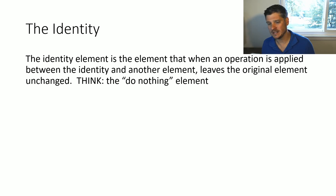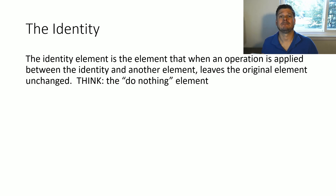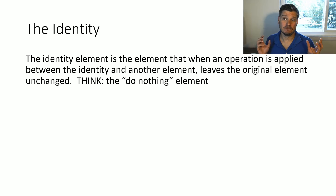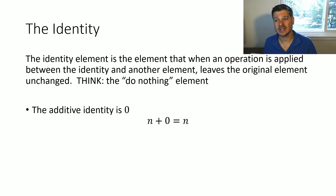Let's move on to the whole point of this video: identities and inverses. We'll start with the identity. The identity is not something unique to linear algebra — it's a concept across all types of algebra and even arithmetic. The identity element is the element that when an operation is applied between the identity and another element, it leaves the original element unchanged. Really, the identity is our 'do nothing' element. In addition, the additive identity is zero, because any number plus zero doesn't change it.